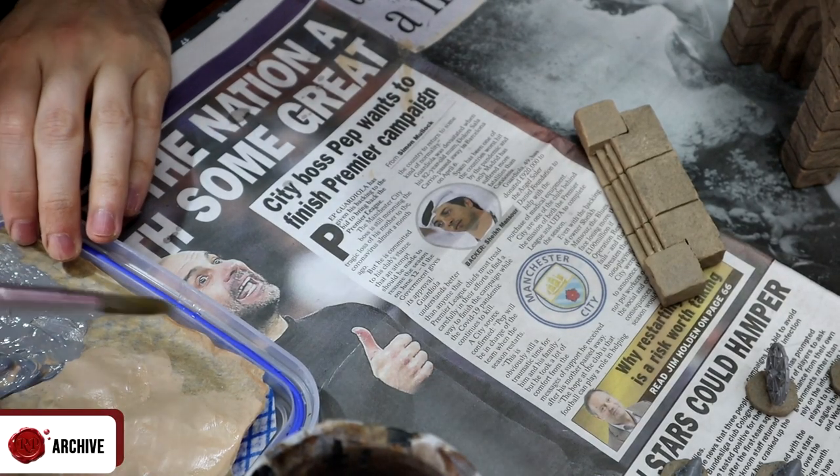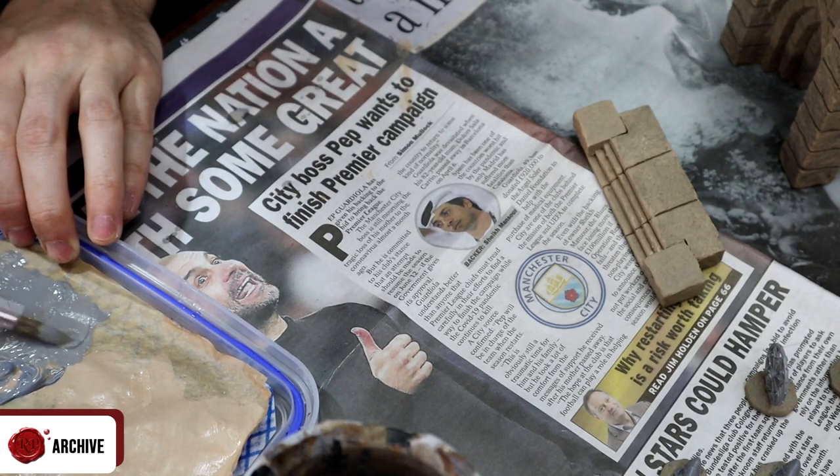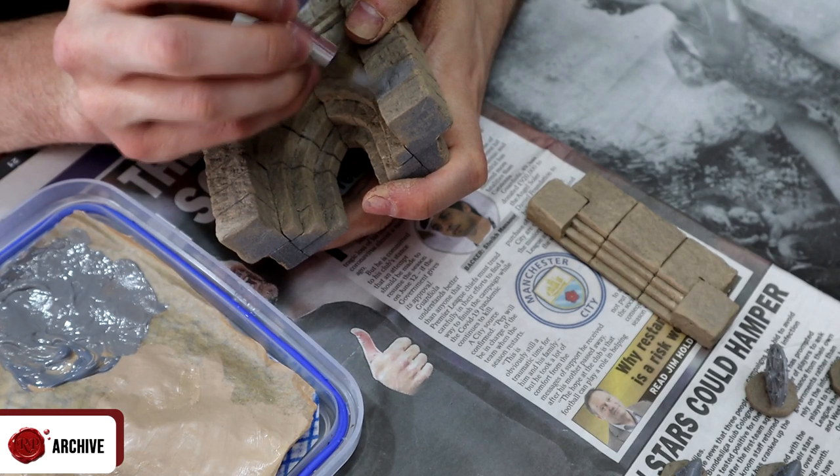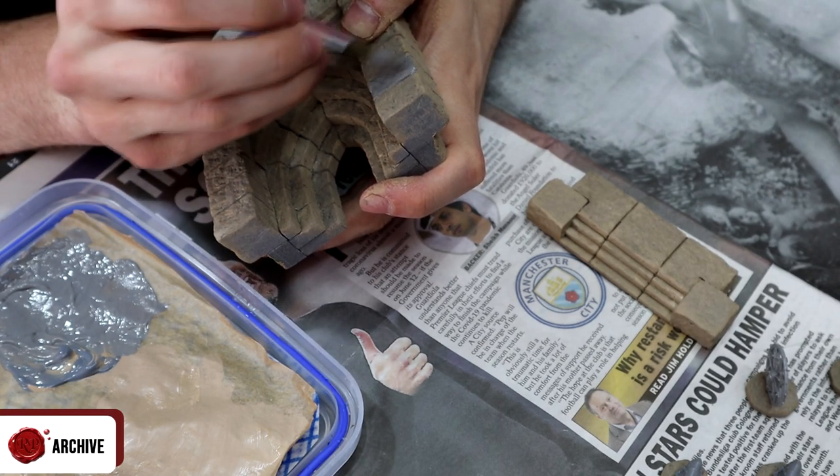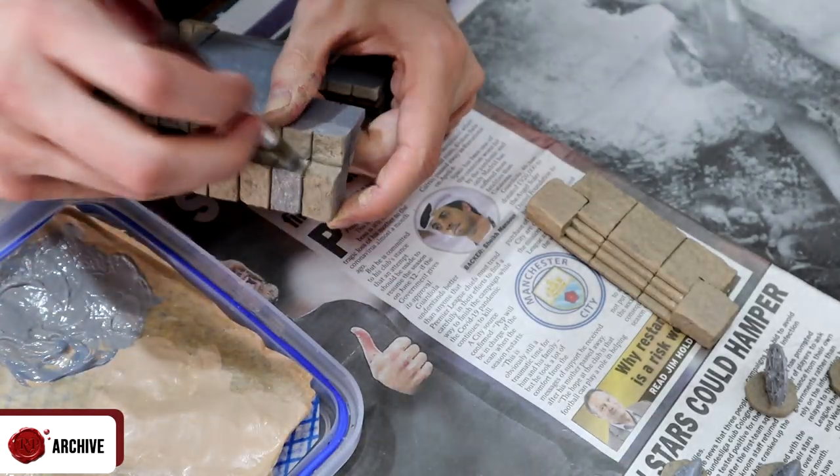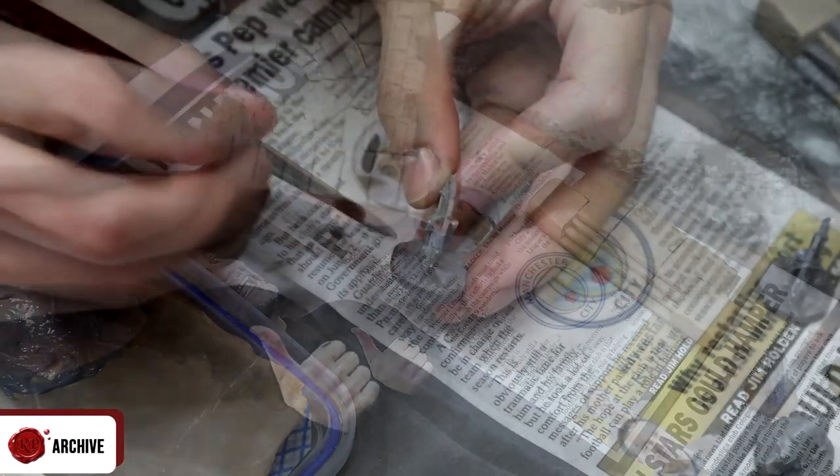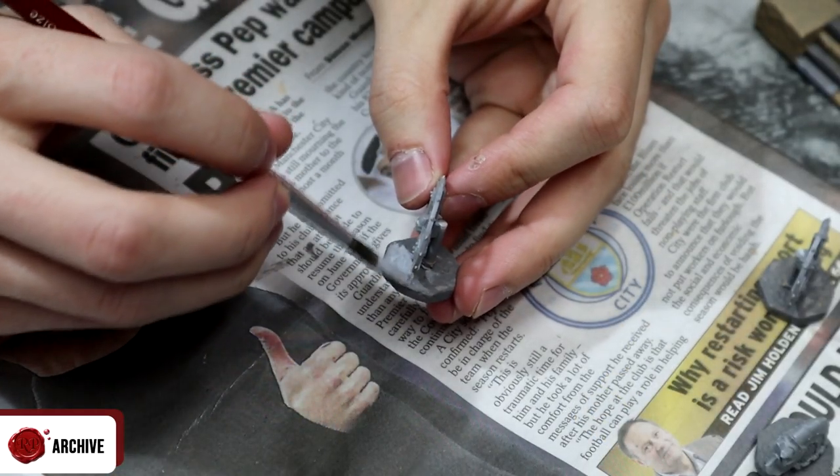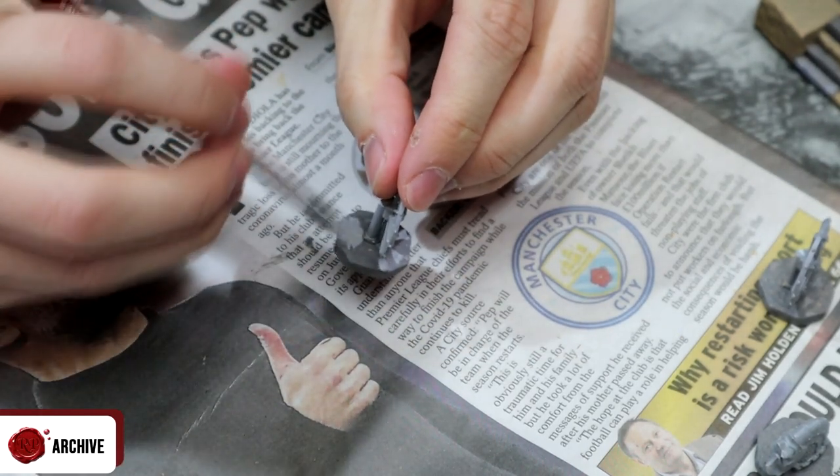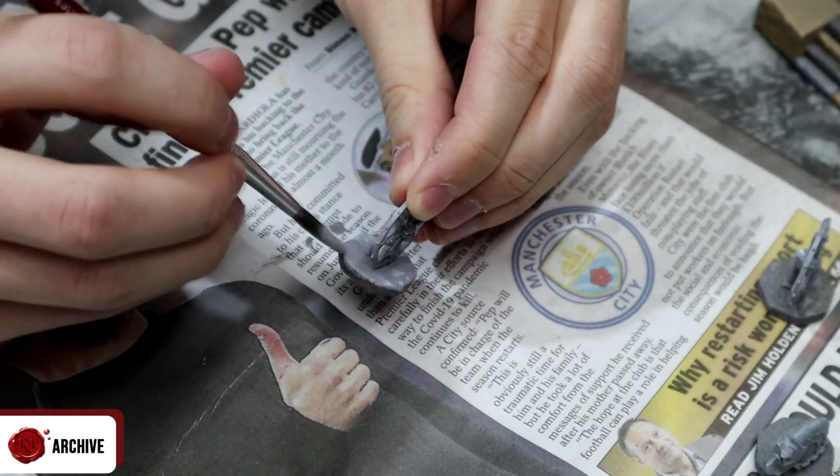I then mixed up some tan and grey to get what is quite possibly my favourite stone colour. If you're looking to make this faster I would base coat in this colour instead and then just skip to the dry brushing. I painted this on just under a third of the bricks. Don't worry about counting exactly how many, just trying to make sure they're scattered around and not next to each other. Then I mixed up some grey with white for this lighter grey which again I painted on just under a third of the bricks.